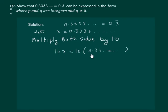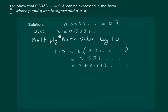When we multiply a decimal number by 10, the decimal point shifts to the right. Hence the right side becomes 3.33333 and so on. Now, look at the technique we use here — we can write this number as 3 plus 0.3333 and so on, but this number was x. So we get 3 plus x. Hence, actually we have 10x is equal to 3 plus x.